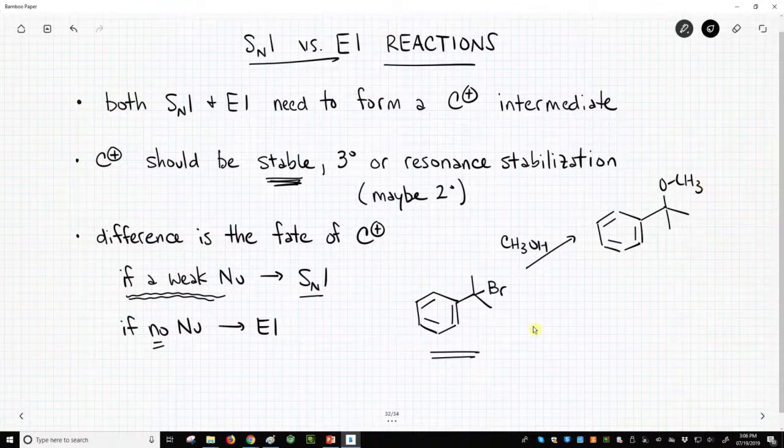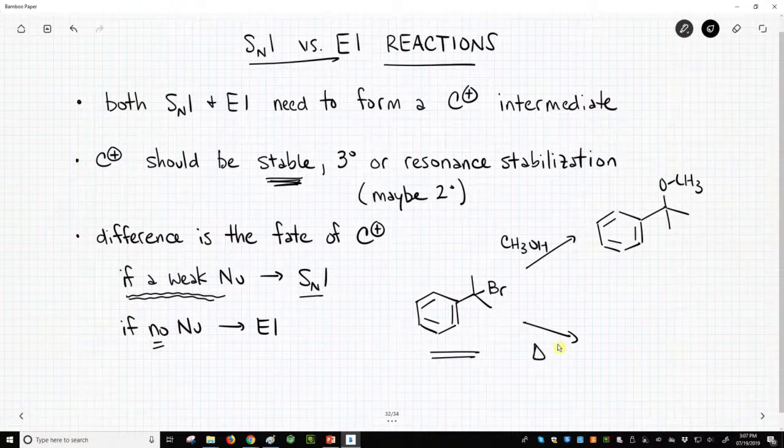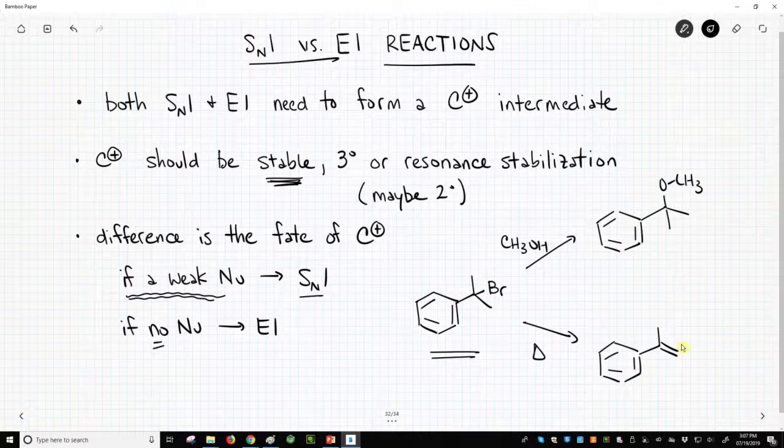If we're going to do an E1, we might not have anything on the arrow because there's no nucleophile present. All we might be given is heat, and if that's the case, we'll show our elimination product.